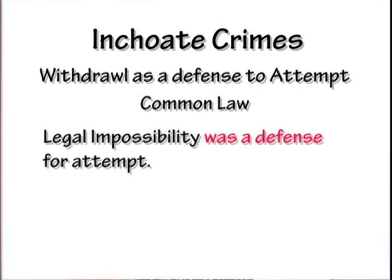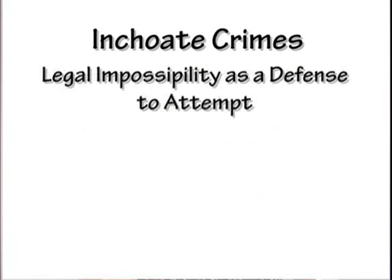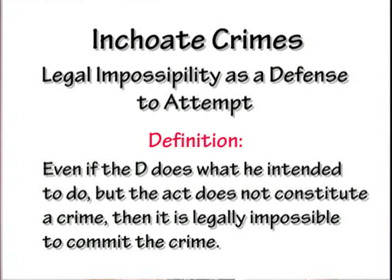At common law, legal impossibility was a defense to attempt, while factual impossibility was not. Legal impossibility means that even if the defendant does what he intended to do, but the act does not constitute a crime, then it is legally impossible to commit the crime — the act simply isn't illegal.